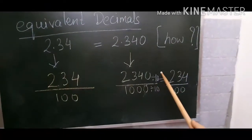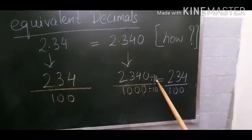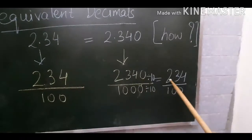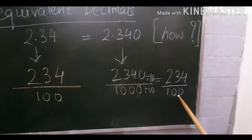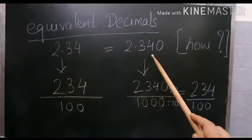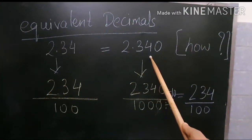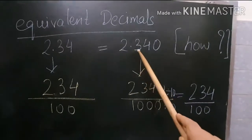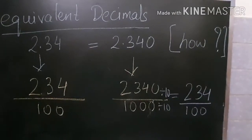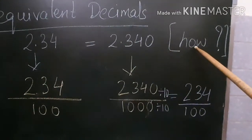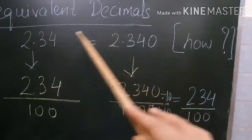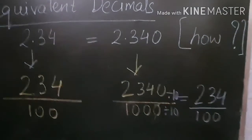If I divide 2340 upon 1000 by 10, I get 234 upon 100 — which is exactly 2.34. So 2.34 is equivalent to 2.340, and also to 2.3400, 2.34000, and so on. You can add as many zeros as you want at the end and the value remains the same.